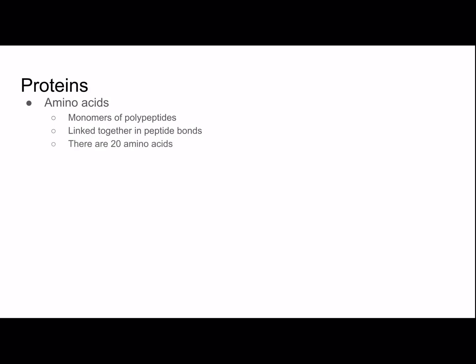There are 20 amino acids, and a protein is one or more polypeptides folded together. To summarize: amino acids are monomers that make up polypeptides, and a protein will be one or more polypeptides.